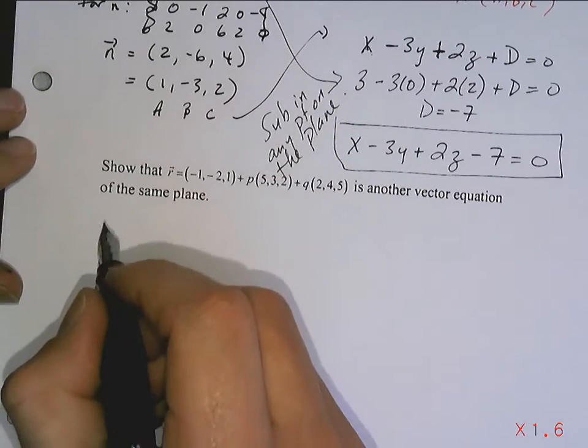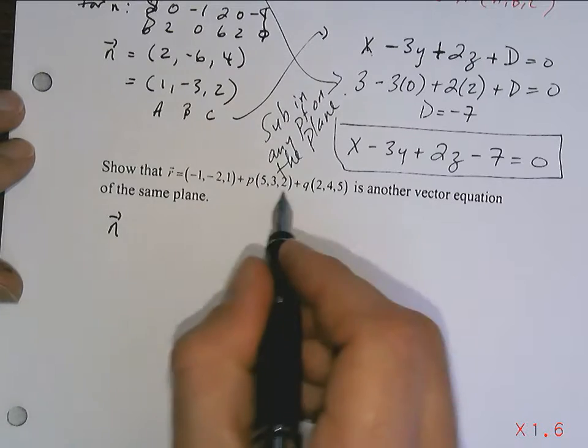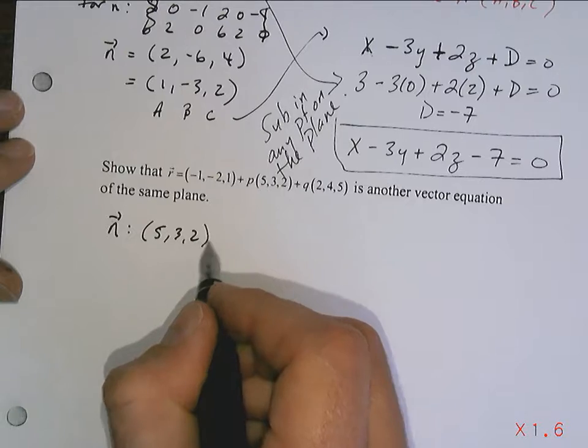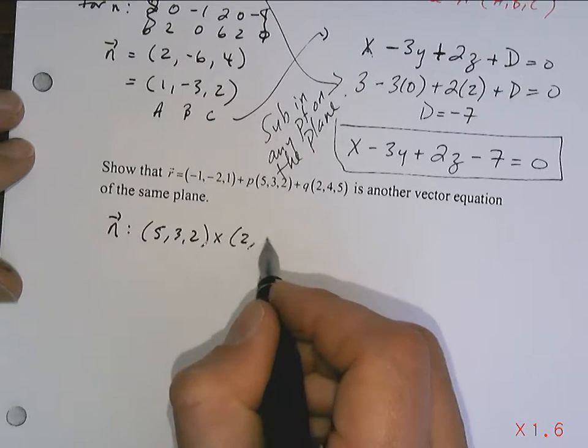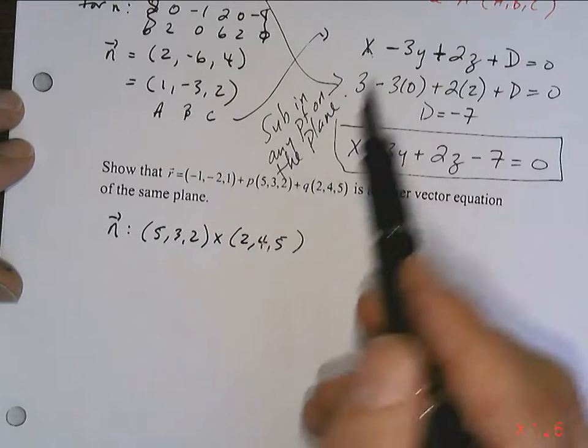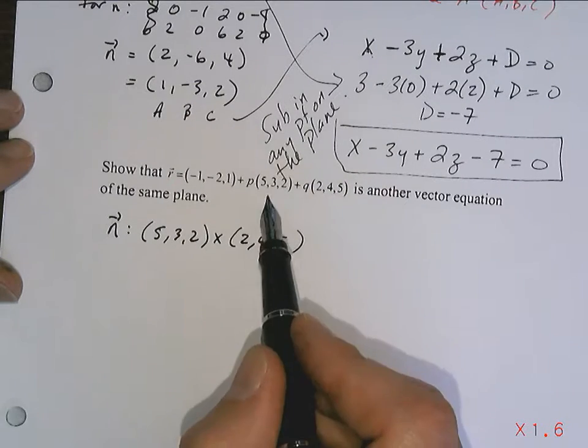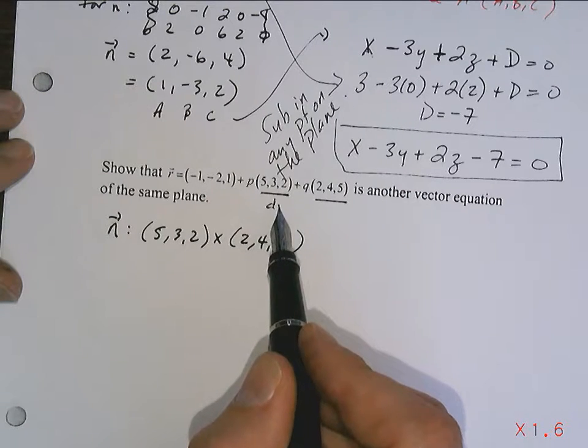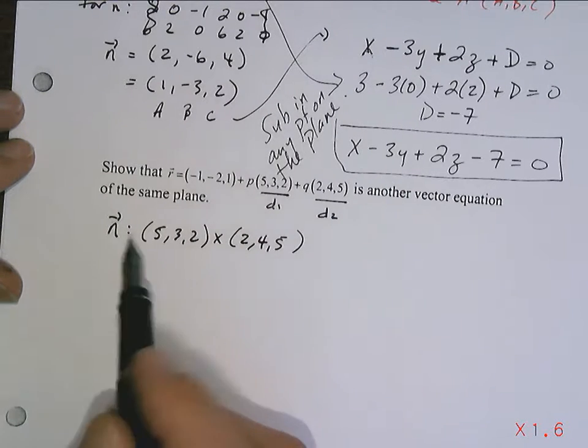First thing I'm going to do is take a look at the normals. So the normal for this one is going to be given by (5, 3, 2) cross (2, 4, 5). Now obviously, if they're going to represent, this is a direction vector, right? And this is a direction vector. Please understand which are direction vectors and which is a point. Like this is a point. So this is D1, this is D2. So I'm going to take the cross.